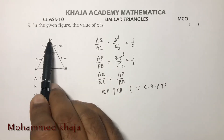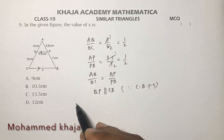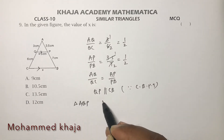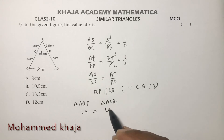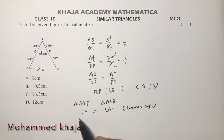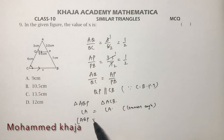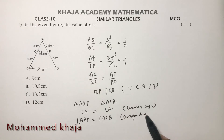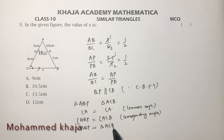Since QP is parallel to CB, triangle AQP is similar to triangle ACB. Angle A is common to both triangles, and angle AQP equals angle ACB as corresponding angles. Therefore, by the AA (angle-angle) similarity criterion, triangle AQP is similar to triangle ACB.